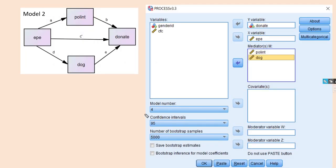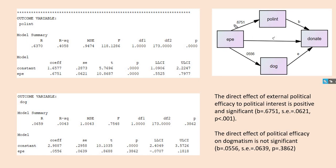For the second analysis, we maintain model number four and add dogmatism as an additional mediator of the effect of external political efficacy on donate. Looking at results, we have two simple regressions: external political efficacy predicting political interest — positive and statistically significant — and external political efficacy predicting dogmatism, which has a positive coefficient but is not statistically significant.